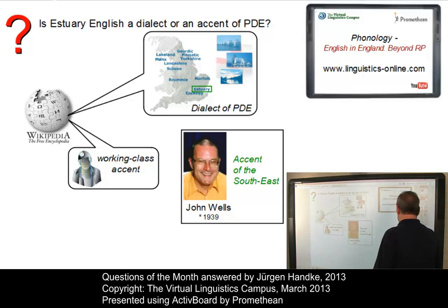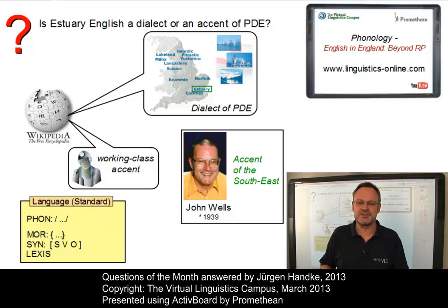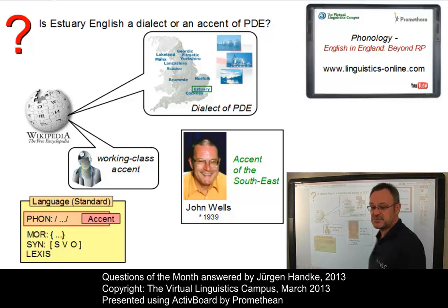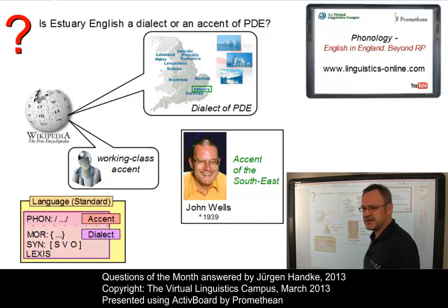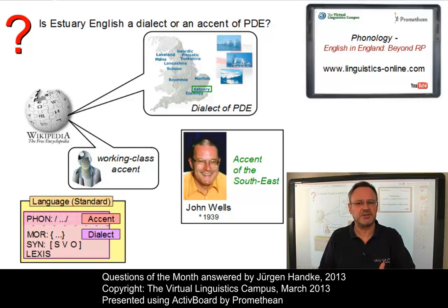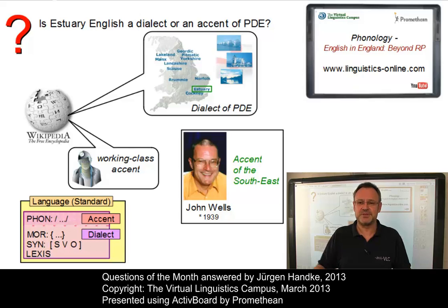Theoretically, the borderline between accents and dialects is clear. A standard can be defined in terms of phonology, morphology, syntax, and lexis. Accents ideally differ from the standard only in phonology, whereas dialects also deviate in morphology, syntax, and lexis. But can a variety differ from the standard only in pronunciation? Probably not — there are always some specific words or morphosyntactic patterns confined to the variety. For this reason, many linguists prefer the term 'phonological dialect' whenever the focus is on phonology, so Estuary English can be defined as a phonological dialect of standard English.